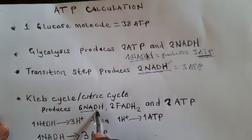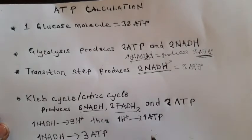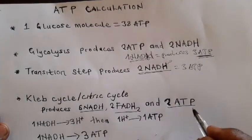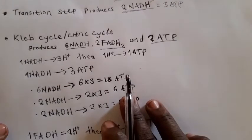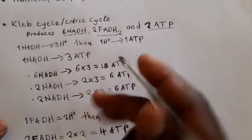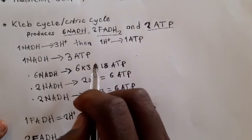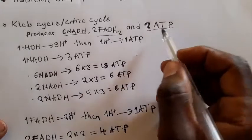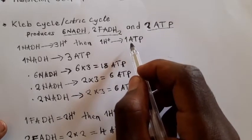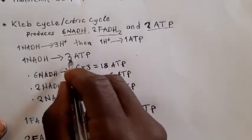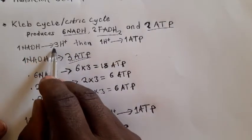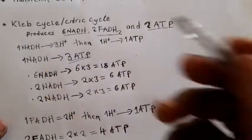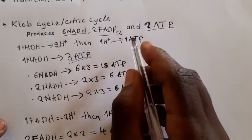The Krebs cycle produces about 6 NADH, 2 FADH2, and 2 ATP directly. Now let's get into calculations. Where does that 3 ATP from 1 NADH come from? One NADH donates about 3 protons, which are hydrogen ions, and each hydrogen ion produces 1 ATP.